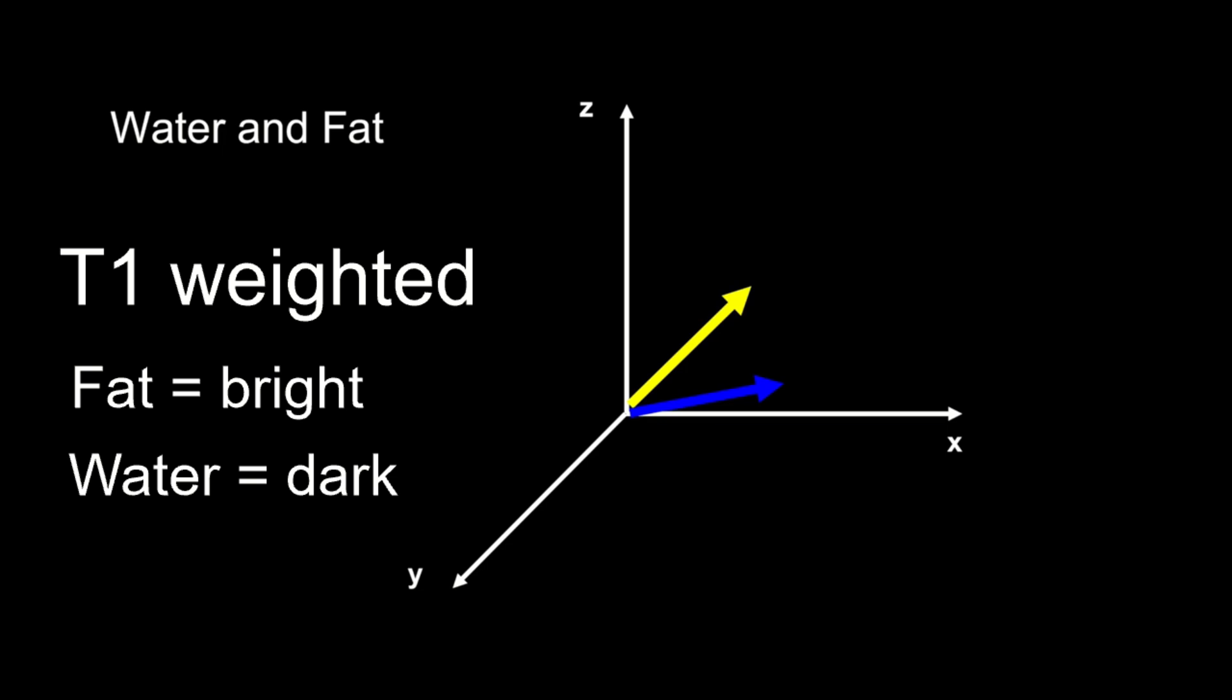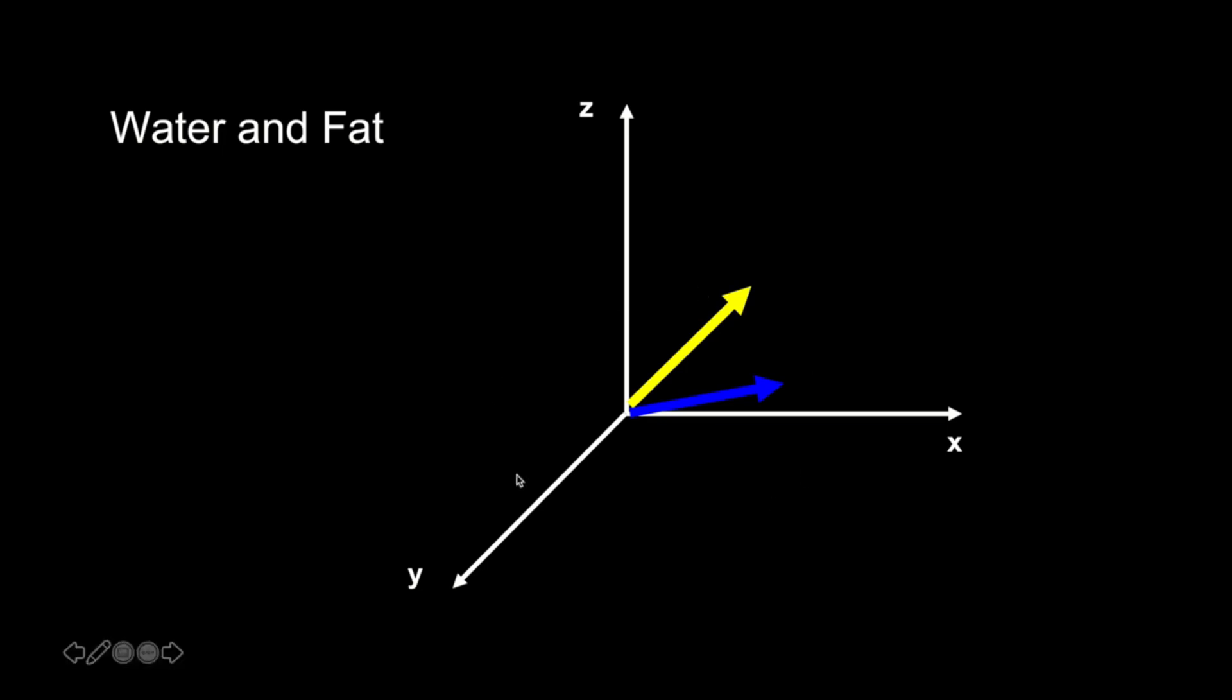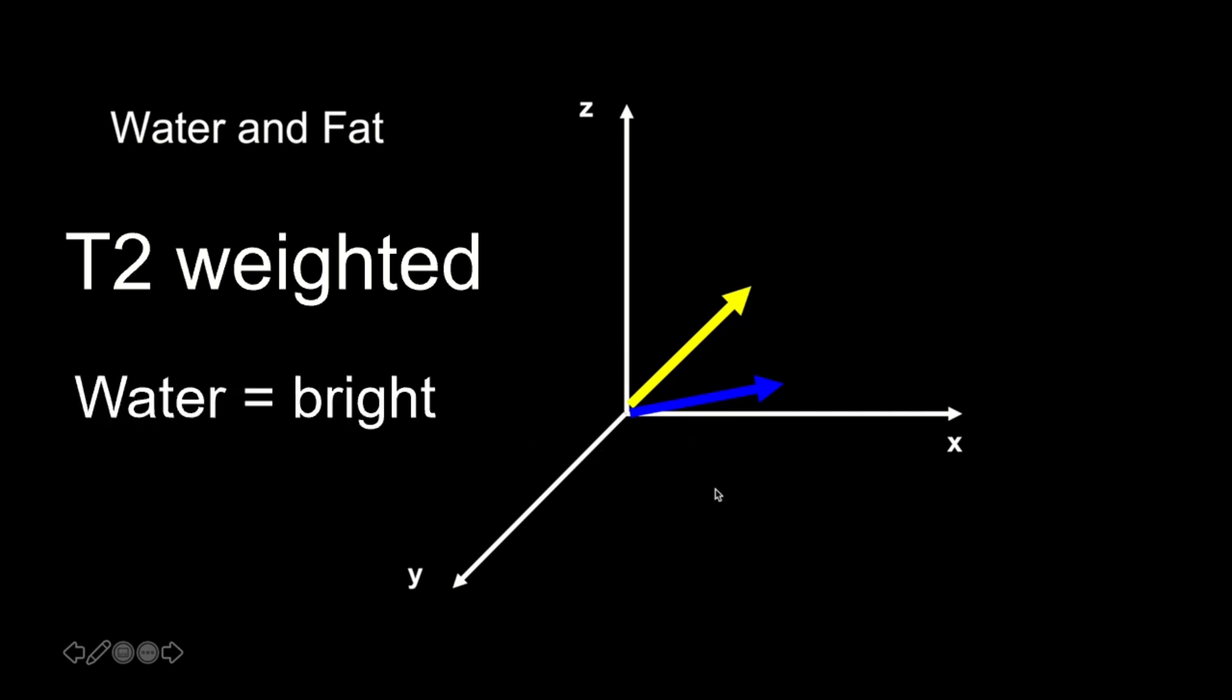Similarly, it takes a long time for the T2 signal of water to decay. So you maintain your water signal on T2 images for a long time. On T2 weighted images, water looks very bright. Fat is a little more complex, so we won't talk about fat on T2 for now.